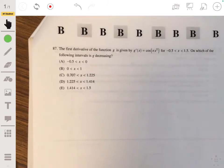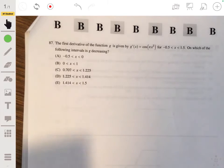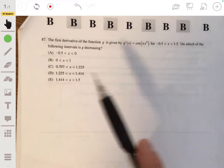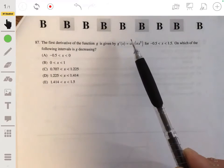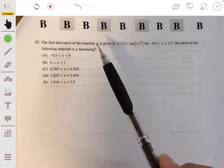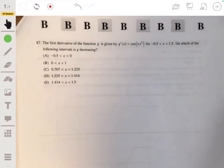Alright, 87. The first derivative of the function G is given by G prime of x is equal to the cosine of pi x squared for x between negative 0.5 and 1.5. On which of the following intervals is G decreasing? Okay, so we just want to see where it's negative. Because this is the derivative. And when the derivative is negative, it's going to tell you that G is decreasing.